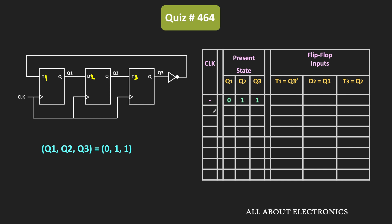So initially, for these values, let us find the inputs for the flip-flops. T1 is equal to Q3', and since Q3 is equal to 1, the initial value of T1 will be equal to 0. And the value of D2 and T3 will be the same as Q1 and Q2, so the initial value of D2 and T3 will be equal to 01. When the clock signal is applied, based on these inputs, the new output will be equal to 000.